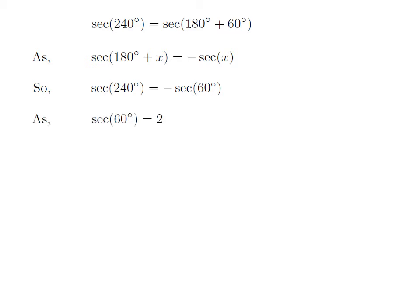We know the value of secant of 60 degrees is equal to 2. So we get the value of secant of 240 degrees is equal to minus 2.